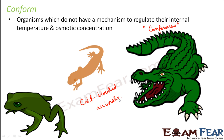These organisms cannot spend so much energy like the regulators can, so they adjust in different ways. However, they do also try to adjust. When the weather becomes very cold, the temperature inside the body of these organisms will also reduce a lot, which can cause death in certain cases. They do not have an internal mechanism as such, but there are a couple of things which they tend to do in order to adjust.